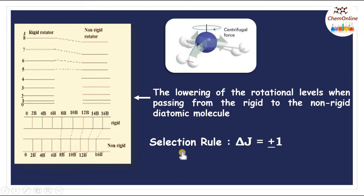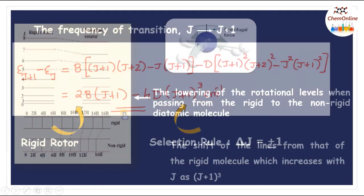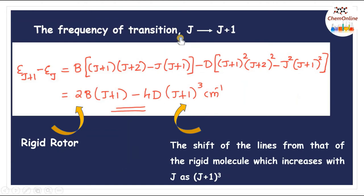The selection rule for a non-rigid diatomic molecule is the same as that for a rigid one: ΔJ = ±1. The spectra will also be somewhat similar, with the only difference being a relative lowering of the energy levels. The frequency of transition from J to J+1 in a non-rigid rotator is given by ε_{J+1} − ε_J = 2B(J+1) − 4D(J+1)³ cm⁻¹. The first term, 2B(J+1), is the same as for a rigid molecule. The second term, 4D(J+1)³, gives the shift of the lines from that of a rigid molecule, and this shift increases with J as (J+1)³.